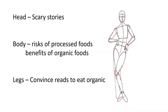For my essay about organic food, I am using a problem-solution structure. This structure fits my intuitive sense that processed food is bad — a problem — and that organic food is good — a solution. I want to begin with a scary story about processed food, that's the head of my essay. I want to inform my reader about the risks of processed foods and the benefits of organic food, that's the body of my essay. And I want to convince my readers to incorporate more organic food into their diet — that'll be the legs of my essay, what I hope my essay will do.